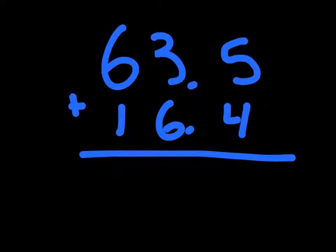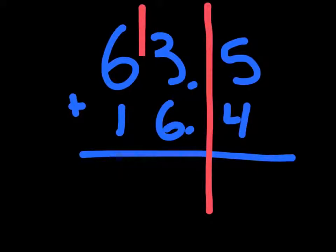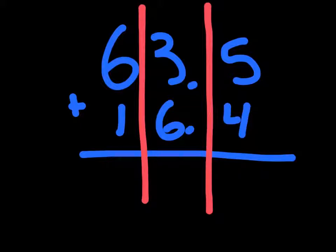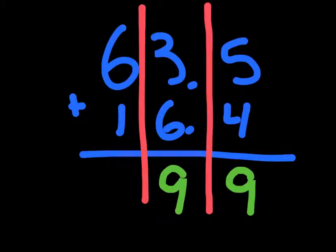Now, let's go on to our next one. We have 63.5 plus 16.4. We have to add these together. So, first, we break these up into three columns. So, we know that 5 plus 4 is just 9. And then 3 plus 6 is 9. And then 6 plus 1 is 7. Then we bring down our decimal point. So, our answer comes out to be 79.9. That's it.